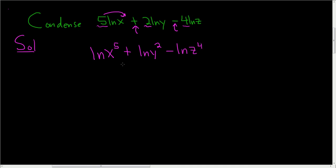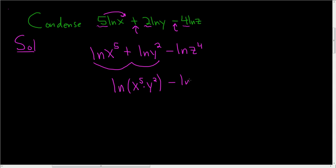And now we're in a good place. We'll start by using the product rule on this term here. So this is the natural log of x to the fifth times y squared, via the product rule, minus the natural log of z to the fourth.